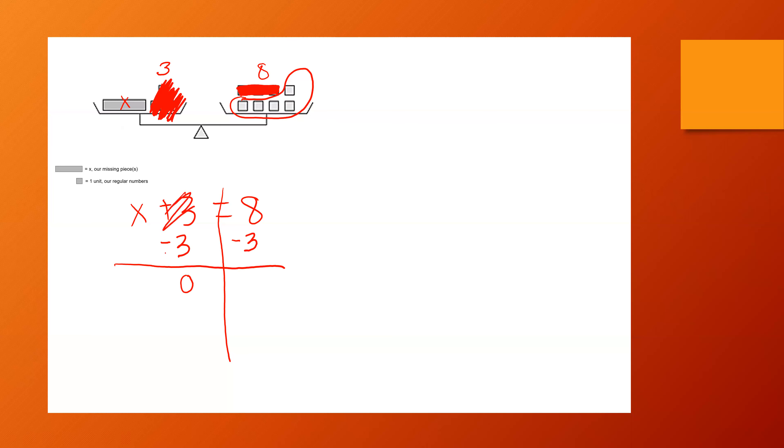My three and my minus three really becomes zero, which we normally don't write. We don't normally write that zero. My X, however, is still here. Equals is still there. And then what is eight minus three? Five. So each little rectangle is worth five.